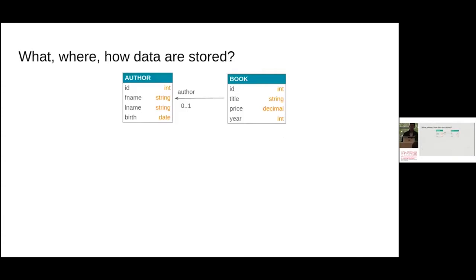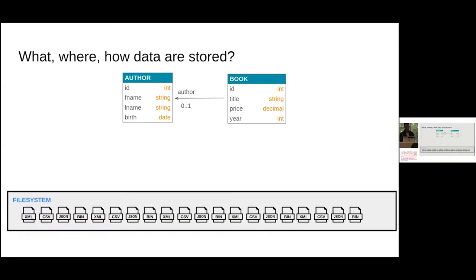The question is how does the data look, or where is it stored? Let's assume we're dealing with mostly structured data — an author entity with attributes ID, first name, last name, and birth date, and a book with an ID, title, price, and year. The data can be in XML files, CSV, or JSON. And as we've seen, there are really too many data management systems available today — DB-Engines ranking has more than 360 DBMS listed.